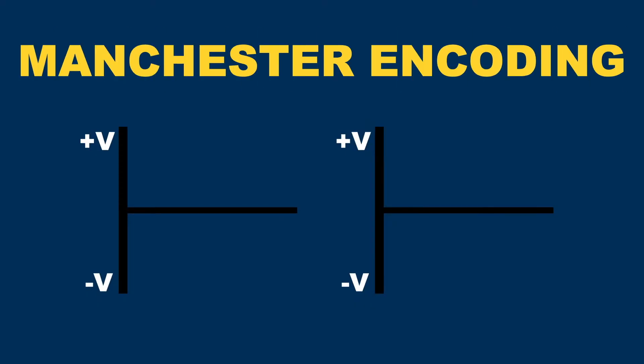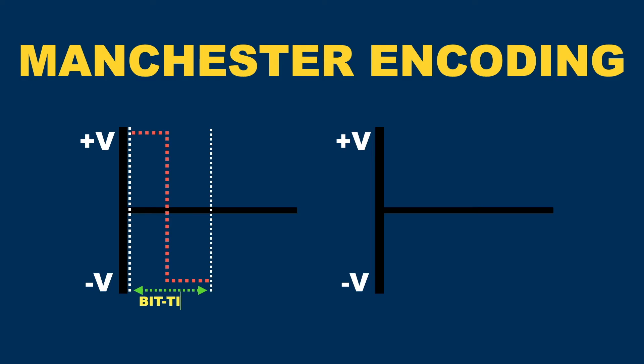In Manchester encoding, the direction of a transition between positive and negative voltage in the middle of the bit time represents the data.